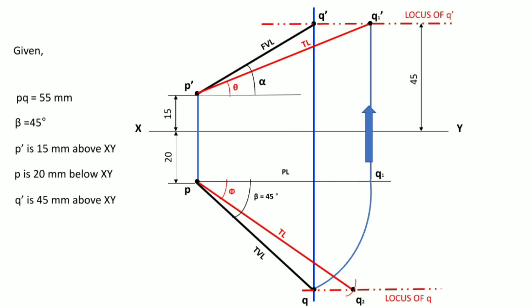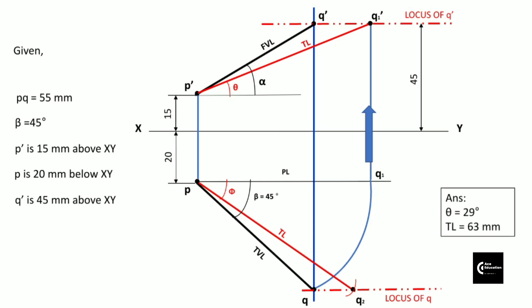So what we have been asked to find is the inclination of the line with HP — that is angle theta — and the true length of the line. Measure these two parameters and you can check your answers. Theta comes out to be 29 degrees and the true length is 63 mm. Whenever projection of lines problems come in different types, note down all the data in terms of notations and one by one use this data to draw the projections of the lines.